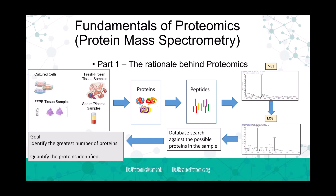We're going to start by talking about the rationale behind proteomics — why do we do it? Our goal is to identify the greatest number of proteins and to quantify them. We start with different sample types: cell culture, tissue samples, tissue embedded on a slide for pathology, or serum and plasma samples. All of these biological samples share the same four basic biological molecules: lipids, proteins, DNA, and carbohydrates. Our goal is to have a sample prep workflow that disrupts those cells and isolates the proteins.